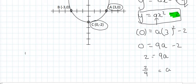And so the final equation of this parabola is going to be y equals the a value, which is 2 over 9, x squared, and then minus 2.